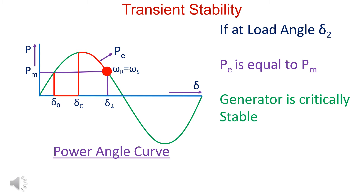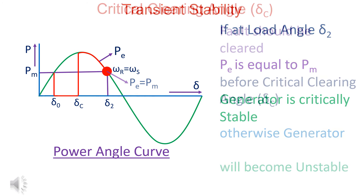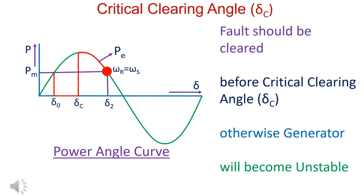At load angle delta_2, if Pe is equal to Pm, the generator is critically stable. The fault should be cleared before the critical clearing time; otherwise the generator becomes unstable.